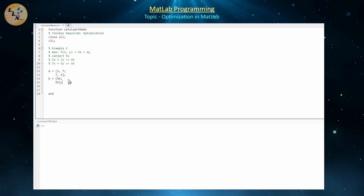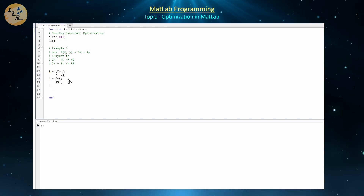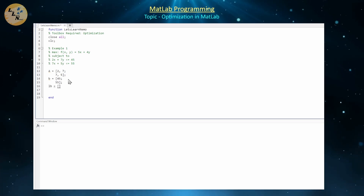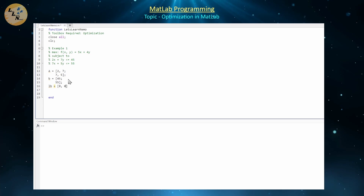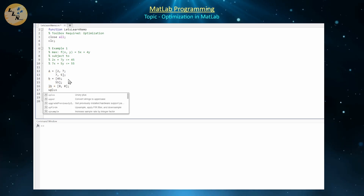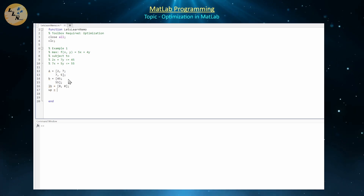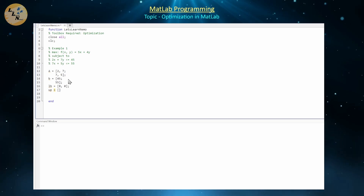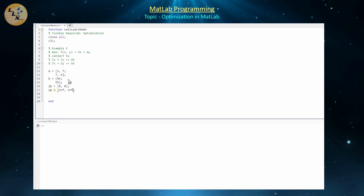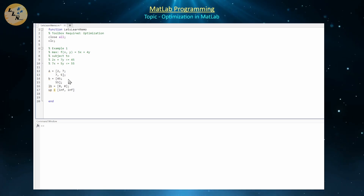Once we have A and B, we need to define the restrictions on x and y. The lower bound, stored in vector LB, is [0, 0] for x and y. For the upper bound, since we have no upper bounds, we set UB = [inf, inf]. So x ≥ 0 and y ≥ 0, with x in the first column and y in the second.